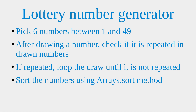Hello everybody, welcome to the draw for example section. In this section, I'm going to set up a lottery number generator. I would like to pick six numbers between 1 and 49. During the random draw, it is possible that the number being drawn has already appeared beforehand. So after drawing a certain number, I'd like to check if it is already repeated. If it is the case, I would loop the draw until it is not repeated. Finally, I would sort numbers by using the Arrays.sort method and present all the numbers drawn.